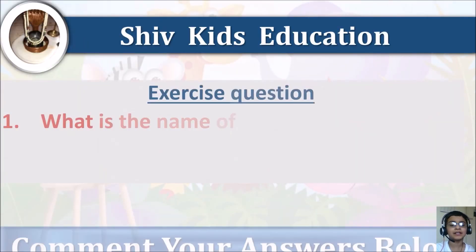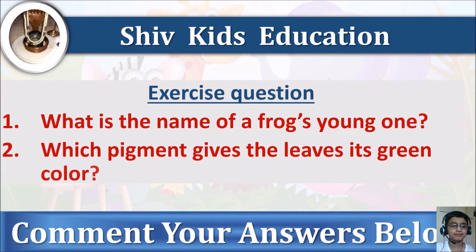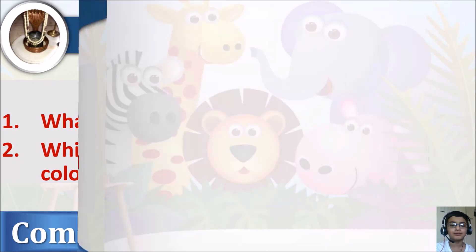Here are the exercise questions. Question 1: What is the name of a frog's young one? Question 2: Which pigment gives the leaves its green color? Please find a comment and answer below.